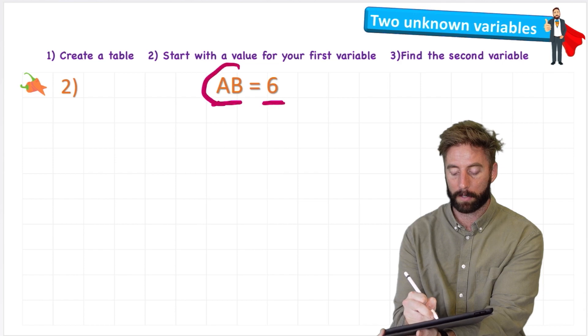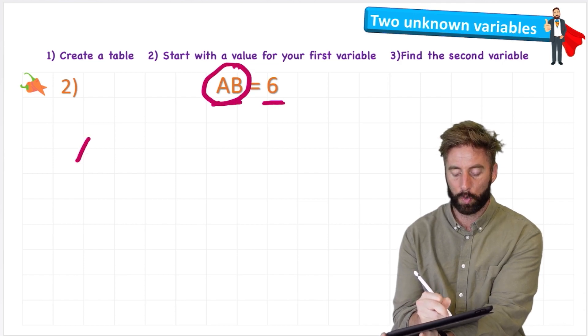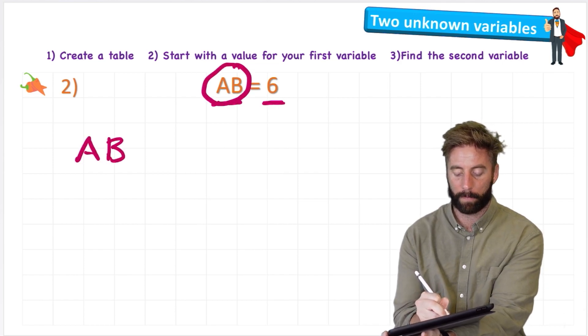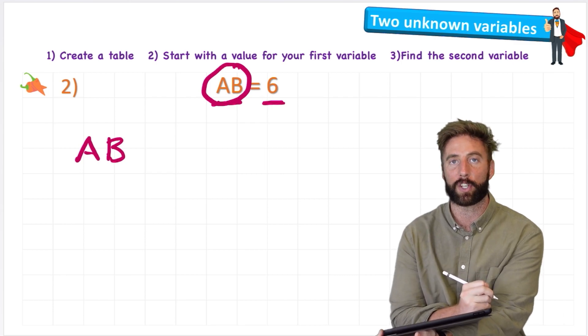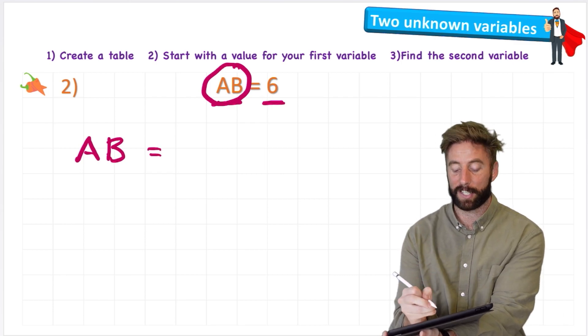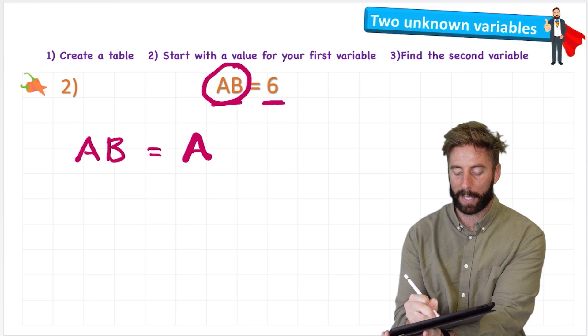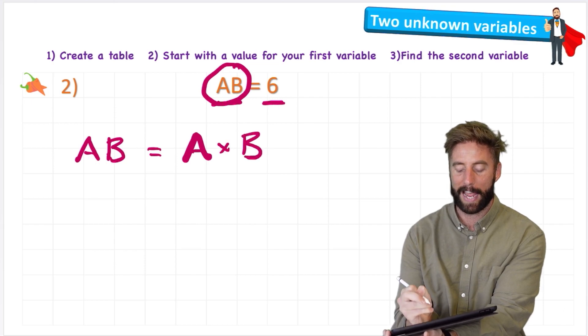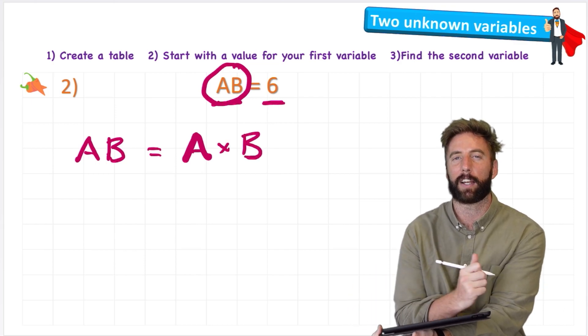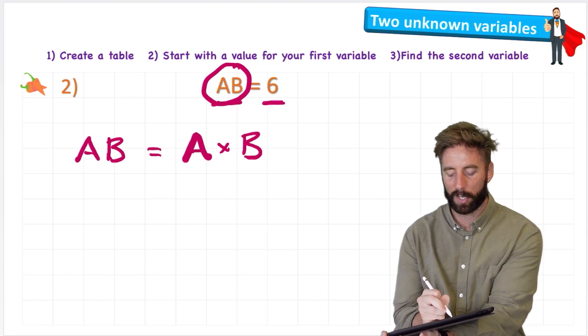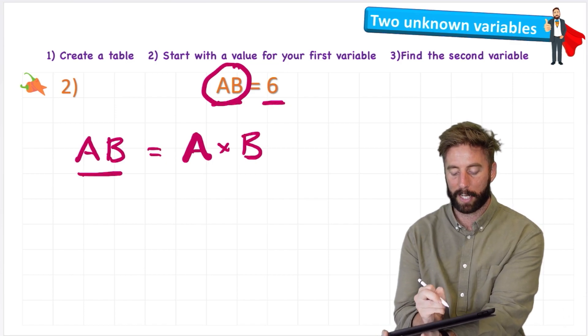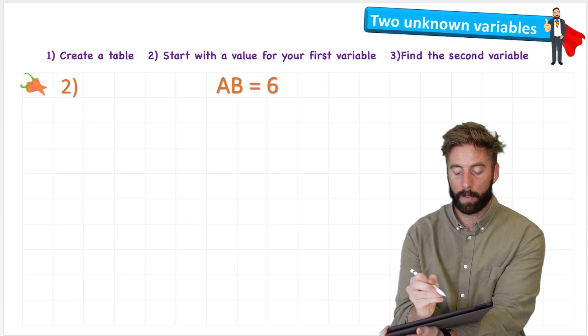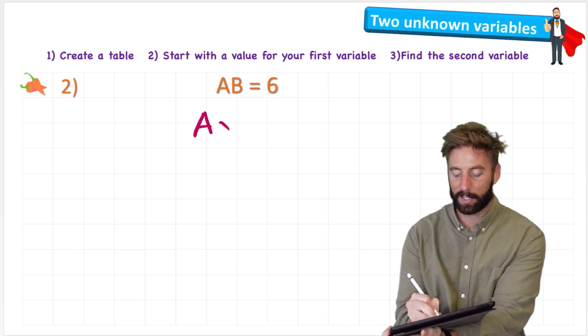But first of all, let's just think about what this means. If we have two variables next to each other without any operation sign between them, what it's actually saying is that we're using multiplication. So this would actually be A × B. It's like a little algebra trick. We don't need to show multiplication. We can just put our variables next to each other. So this equation basically says A × B = 6.